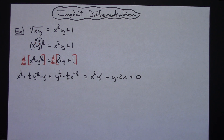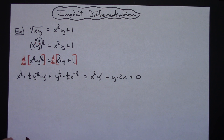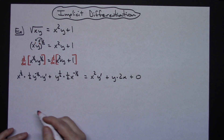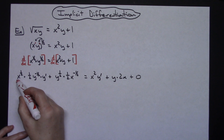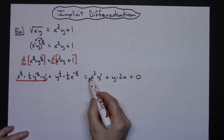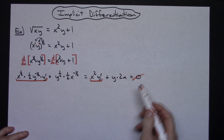Now I'm going to keep my y prime terms on the left hand side. If it doesn't have a y prime in it, I want to move it to the right. I'll do that and clean it up all in the same step. This term has a y prime in it; this does not. This has a y prime; this does not. And the 0 is not going to be there.